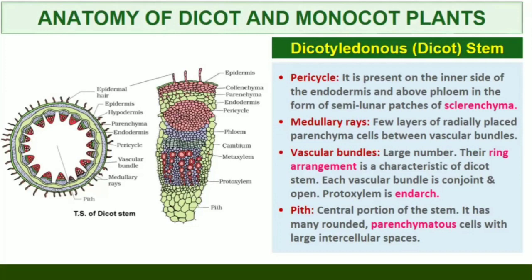A large number of vascular bundles are arranged in a ring. The ring arrangement of vascular bundles is a characteristic of the dicot stem. Each vascular bundle is conjoint, open, and with endarch protoxylem. A large number of rounded parenchymatous cells with large intercellular spaces occupy the central portion of the stem and constitute the pith.